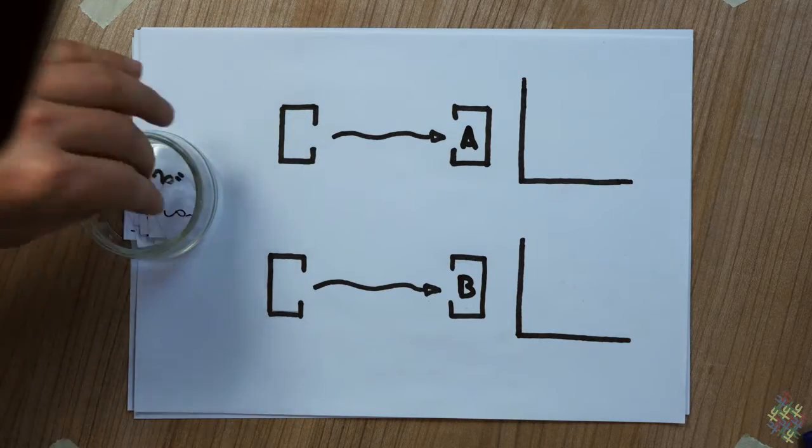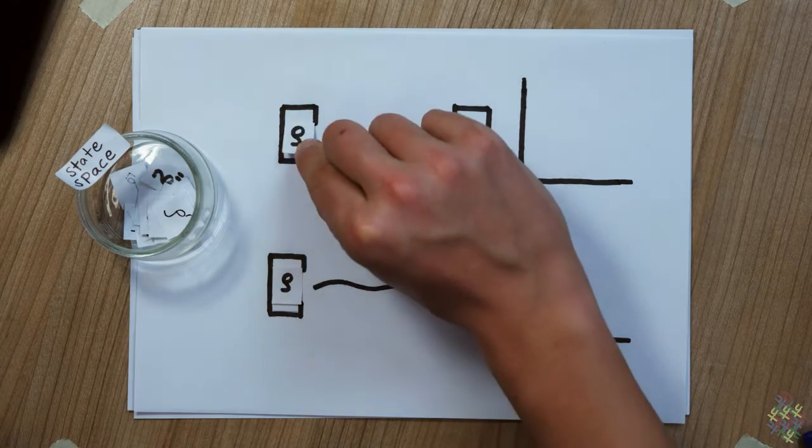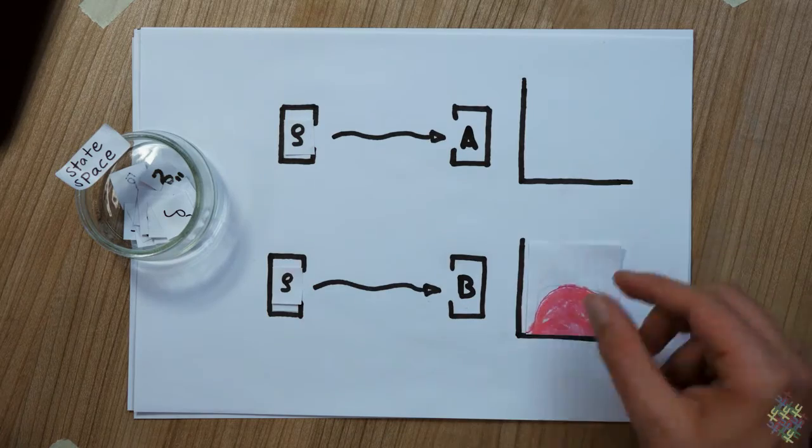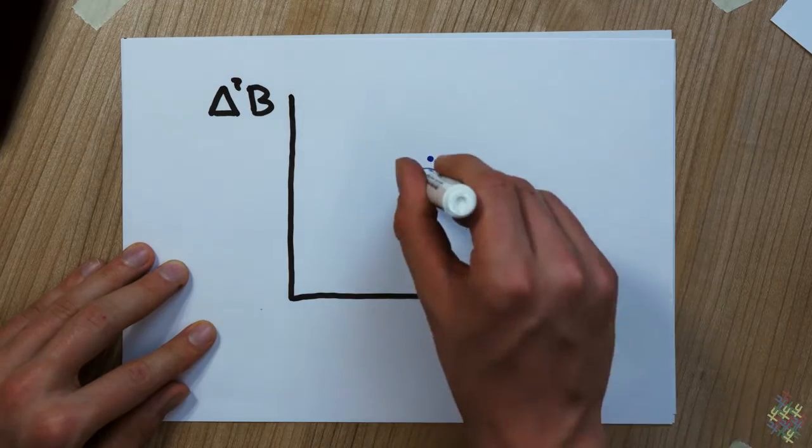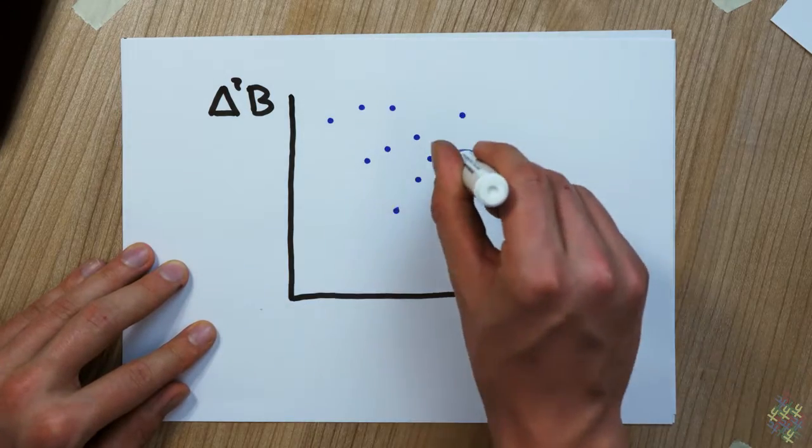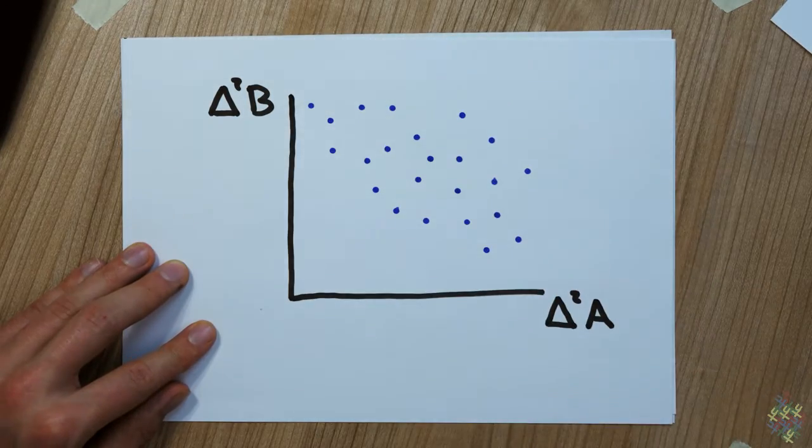For every rho, we take note of the variances and get one point in this diagram. Changing rho gives more points and, in the end, this shaded region.